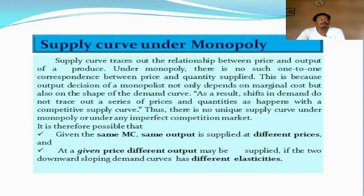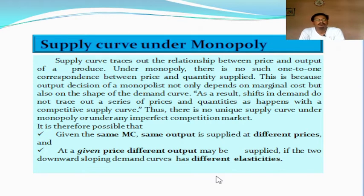One of them is the absence of supply curve under monopoly market. We know that supply curve is a curve which shows the relationship between the price and quantity supplied of a commodity. Depending on that relation between the two variables, price and quantity supplied, we construct a supply curve by tracing out the relation between the two variables.